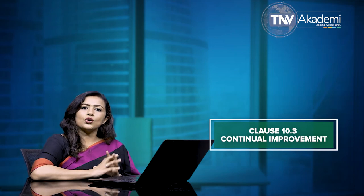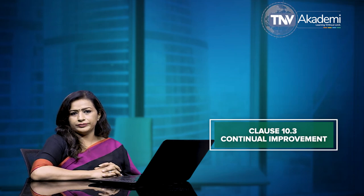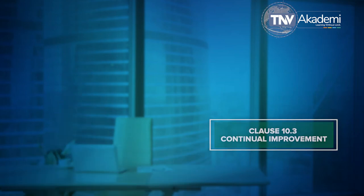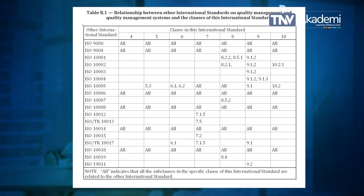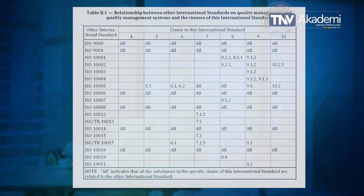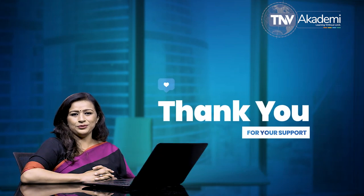We have now discussed all of clause 10 — Improvement. On screen you can see Table A.1, which contains the major differences in terminology between ISO 9001:2008 and ISO 9001:2015. Also on screen is Table B.1, containing the relationship between other international standards on quality management and quality management systems. We have now reached the end of the session. Thank you all for your interest and attention. Best wishes.